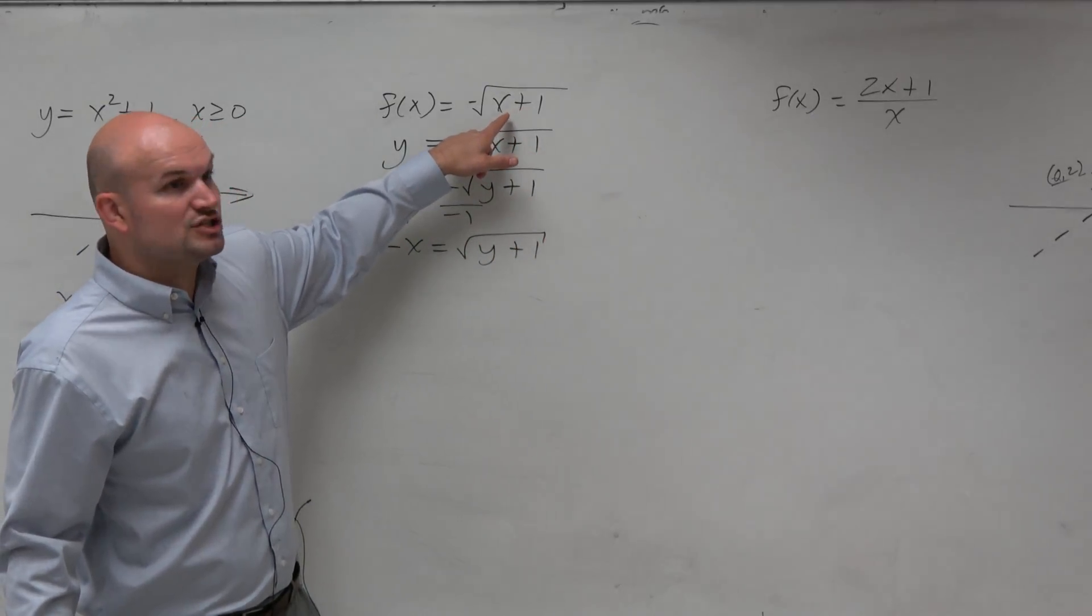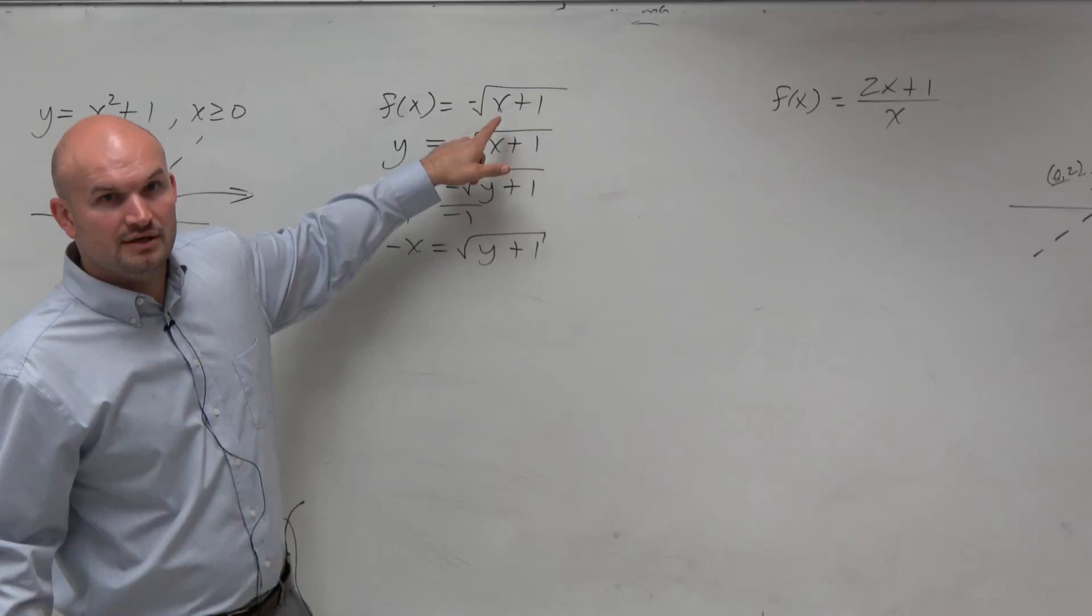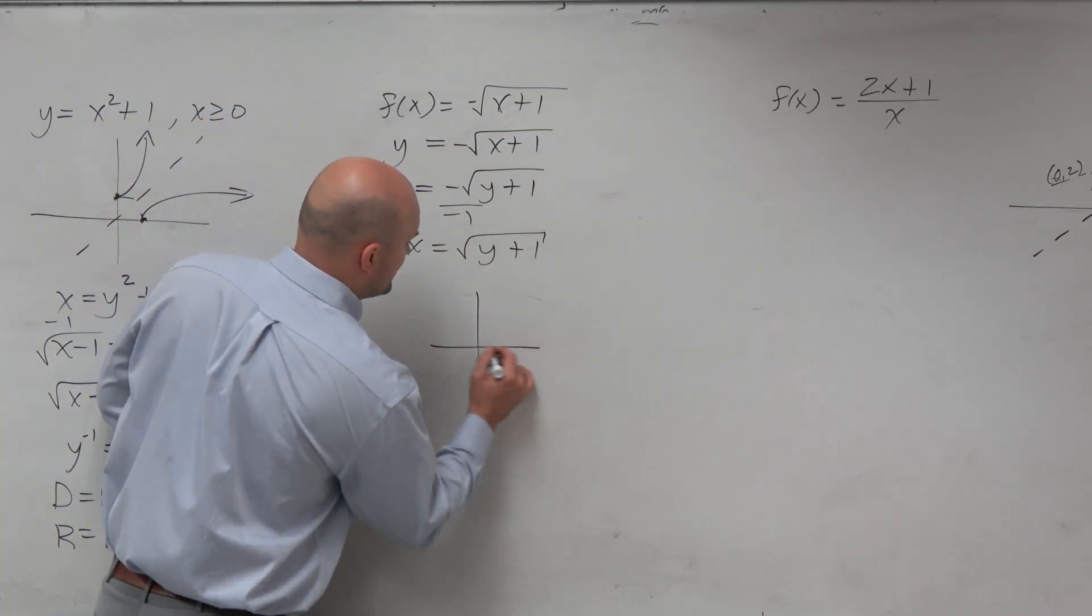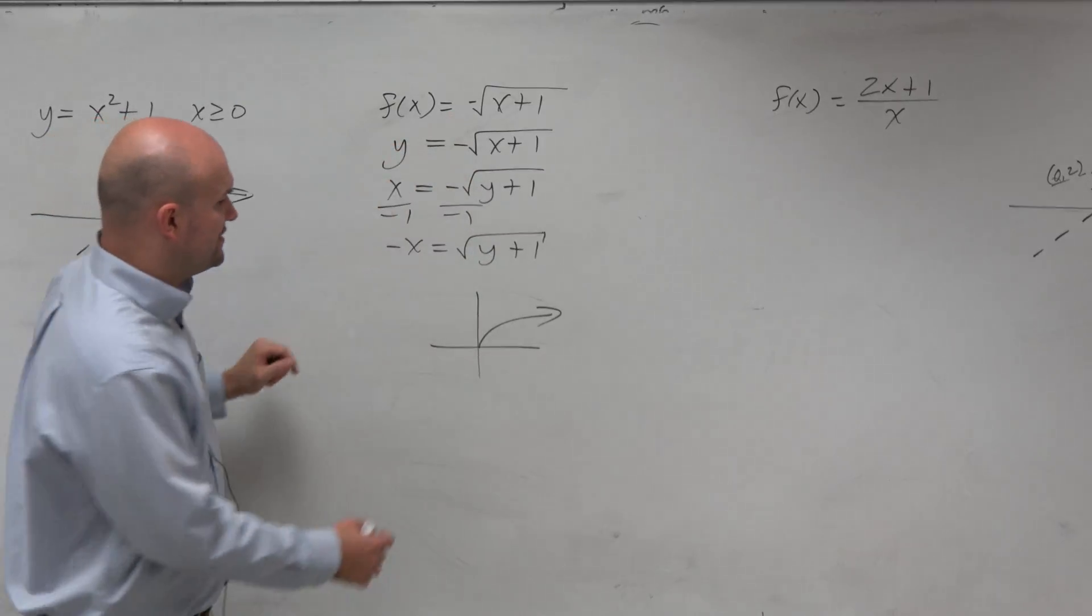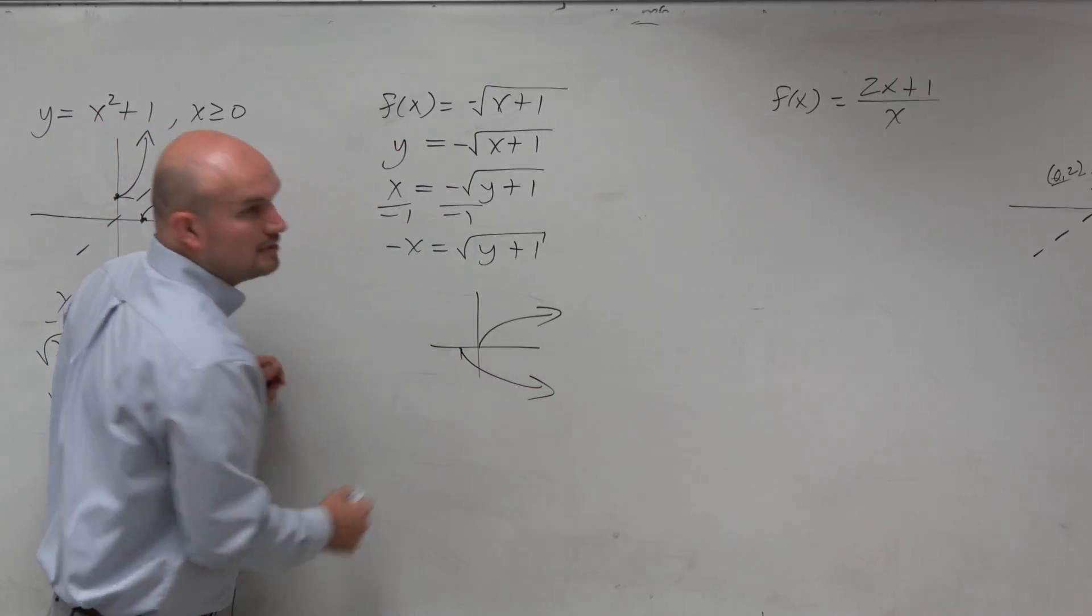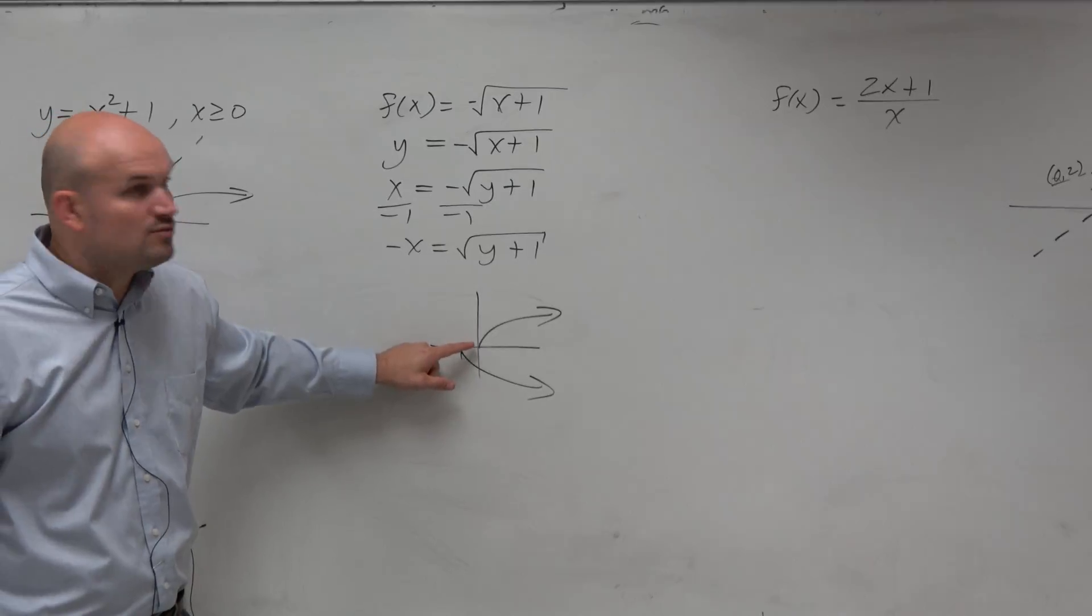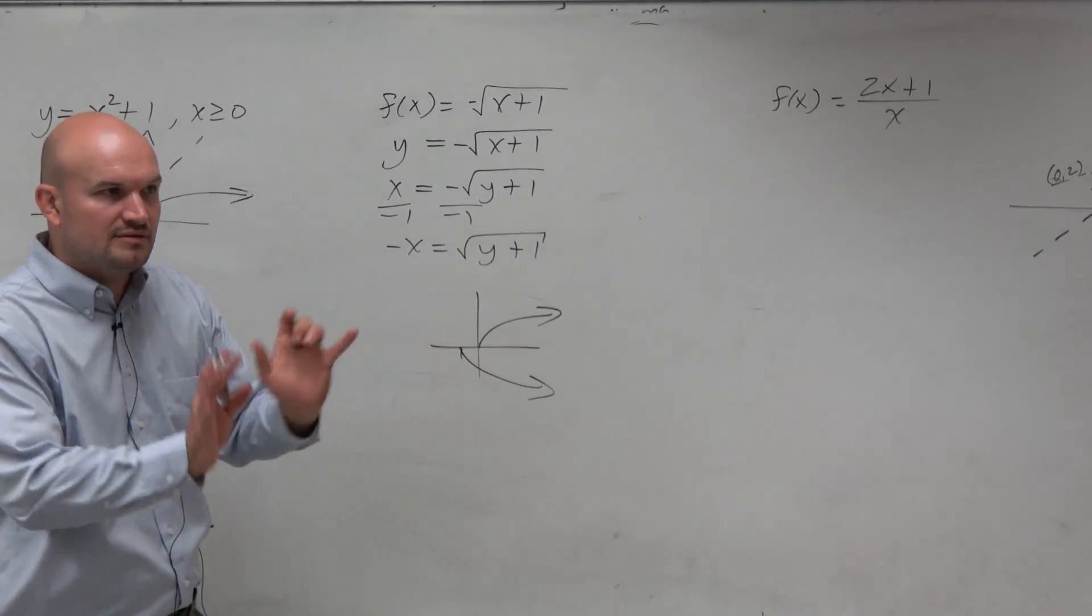Let's look at this. Is this function, is this going to be 1 to 1? If you guys think about what the square root function? Square root function looks something like this. Let's see, the transformations reflect x-axis and shift left 1. Right? So we know this is 1 to 1. We don't need to worry about having a restriction.